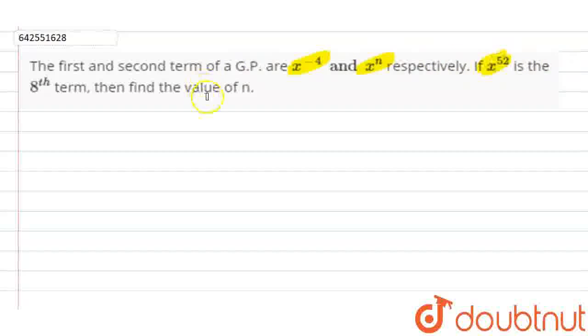So, x to the power of 52, you have to find the value of n. So first of all, we will write down the given information. The first term a₁ is equal to x to the power minus 4, and a₂ is equal to x to the power n, and a₈ is equal to x to the power 52.